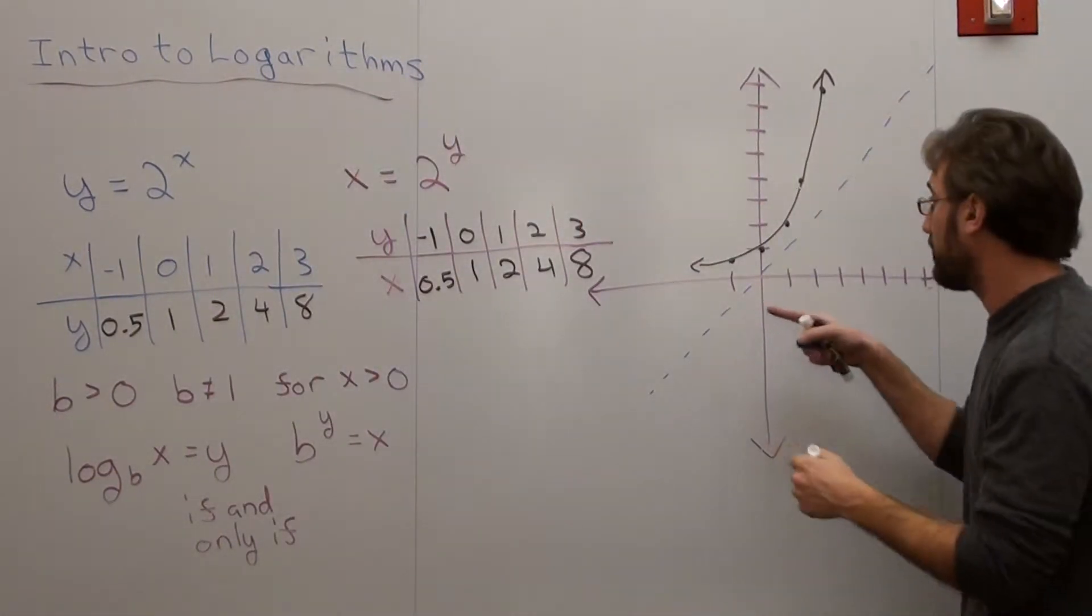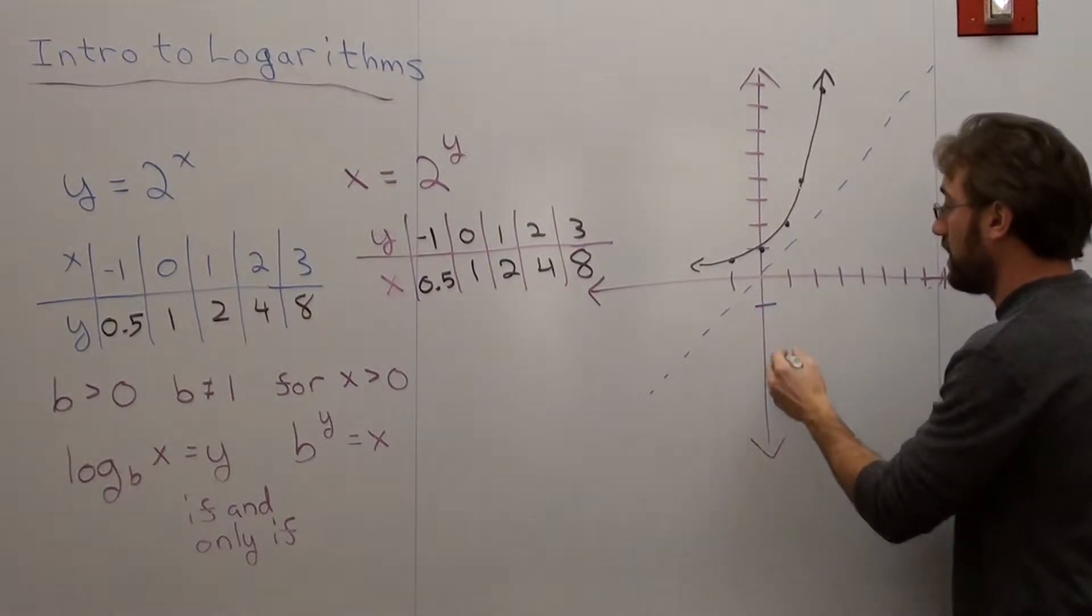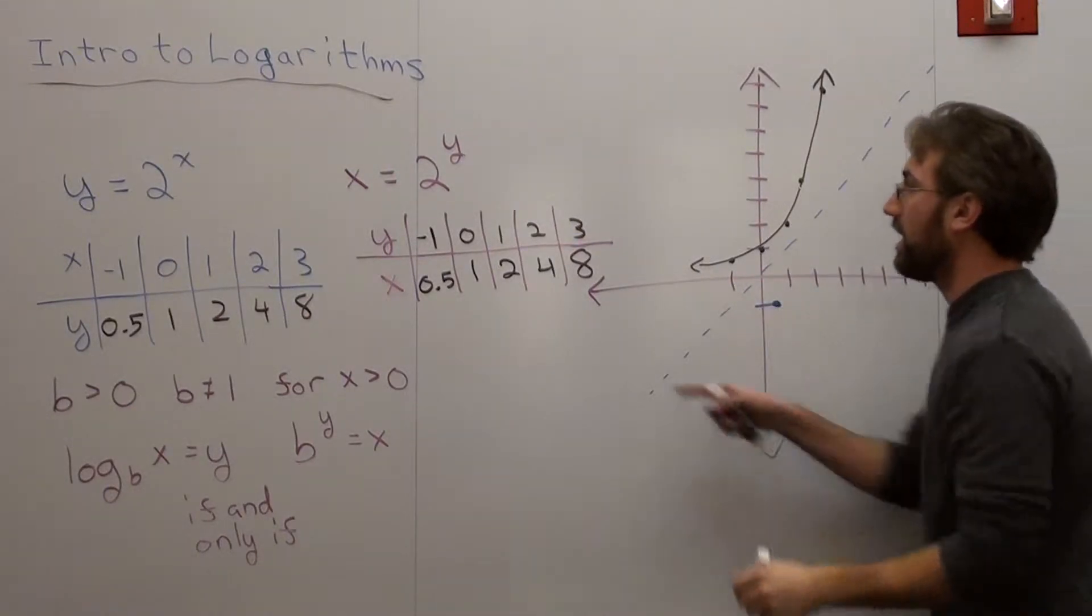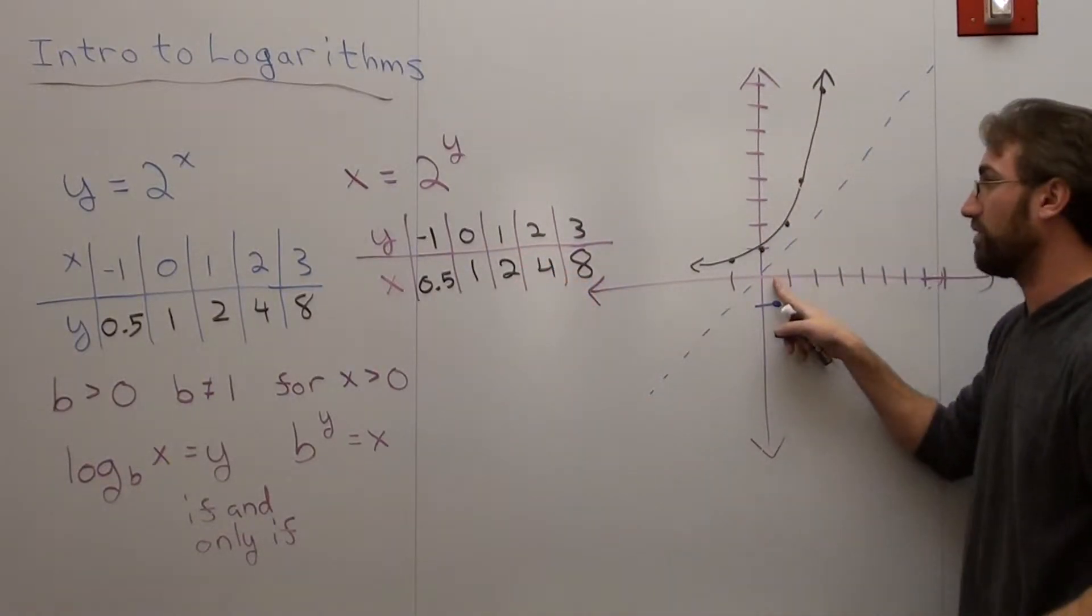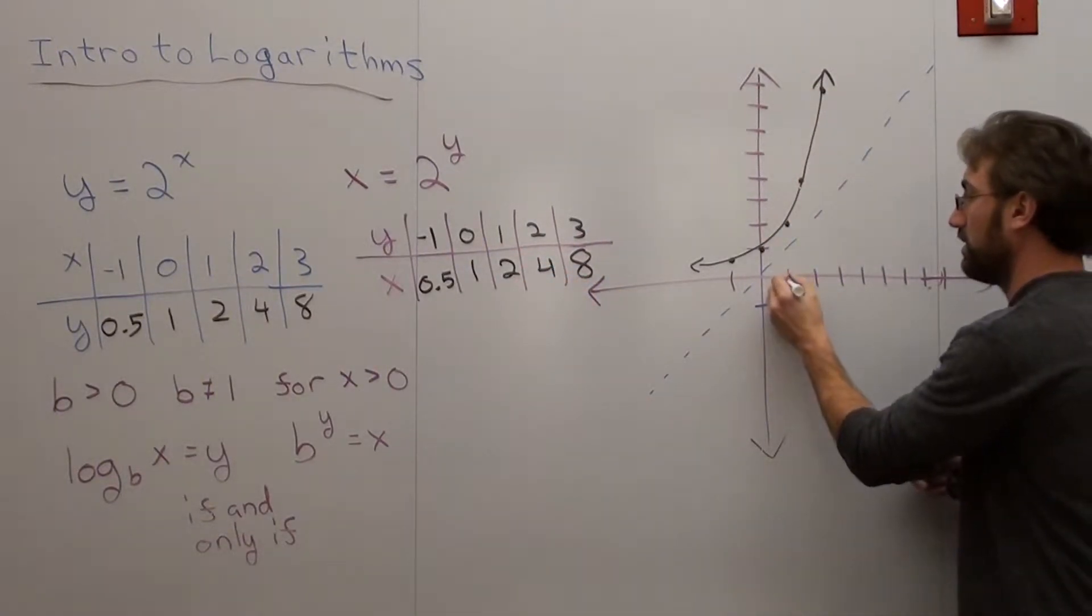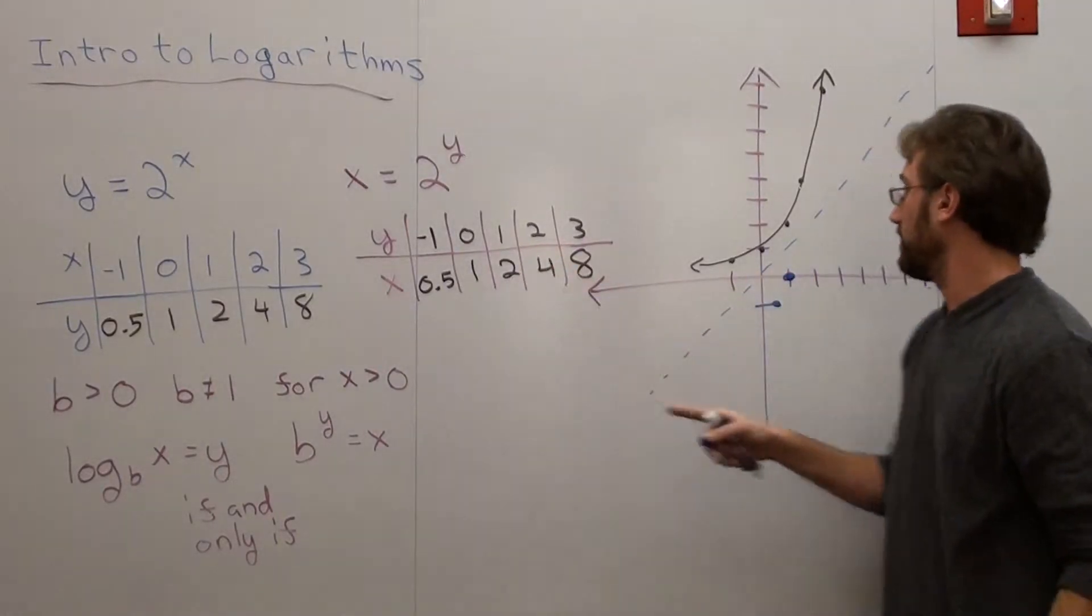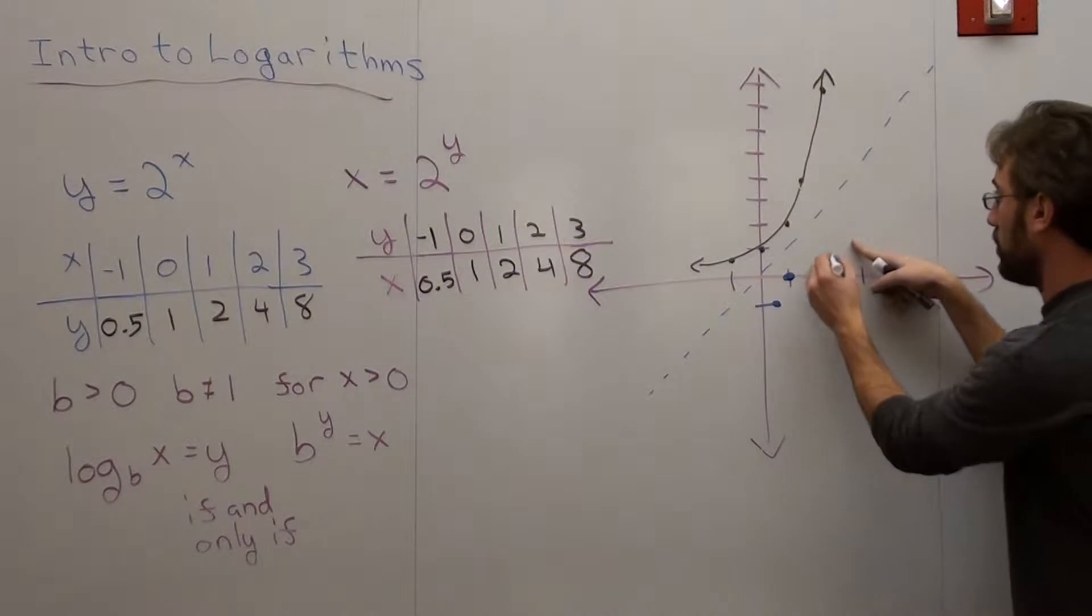So at negative 1 for y, x is at 0.5, so it's like right there. And at 0 for y, now careful here, at 0 for y, x is 1. And at 1 for y, which is right here, x is 2.